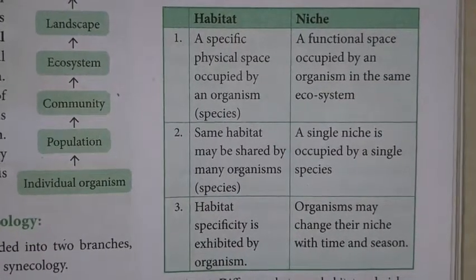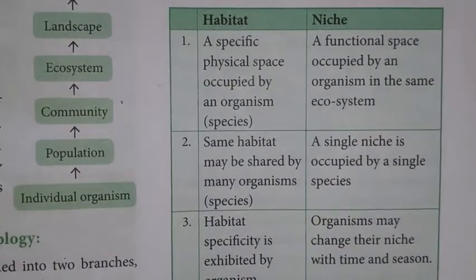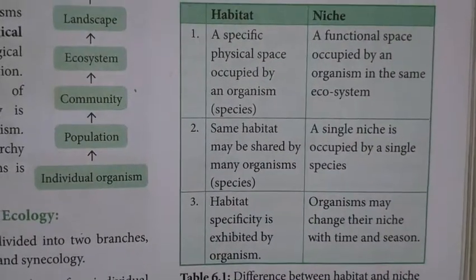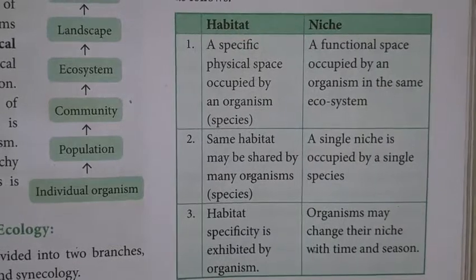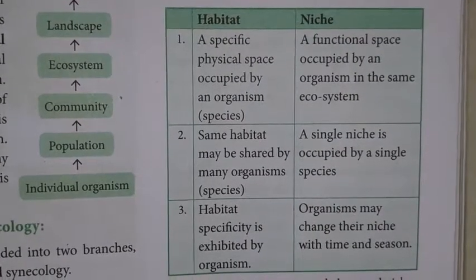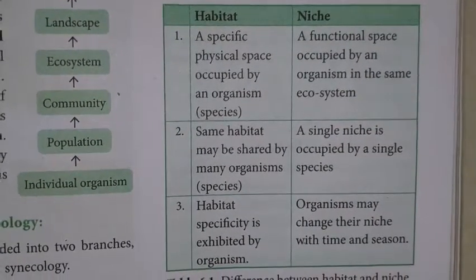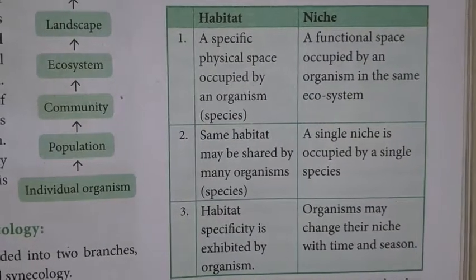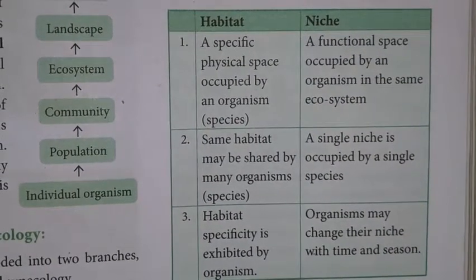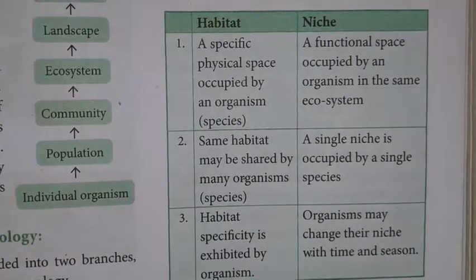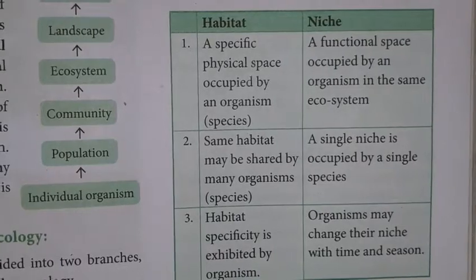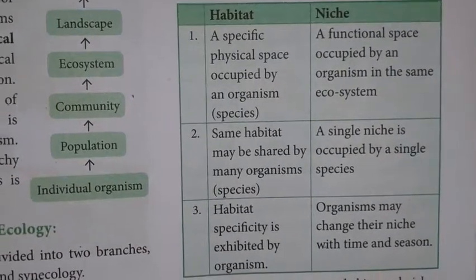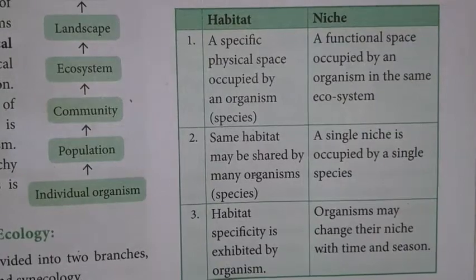Examples for habitat include grassland, lake ecosystem, and stream ecosystem. Examples for niche include birds in grassland and the niche of the panda.